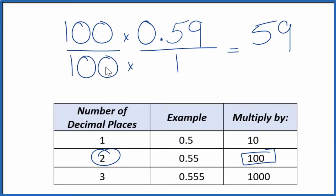That's because 100 over 100, if you divide 100 by 100, you just get 1. So we're multiplying by 1. Again, we don't change the value.